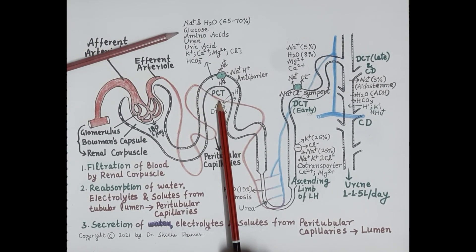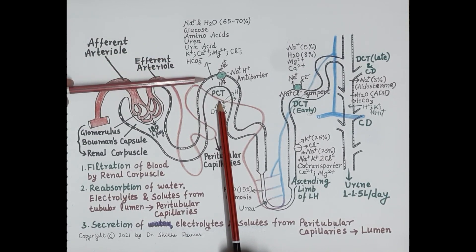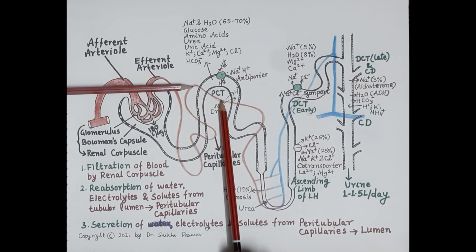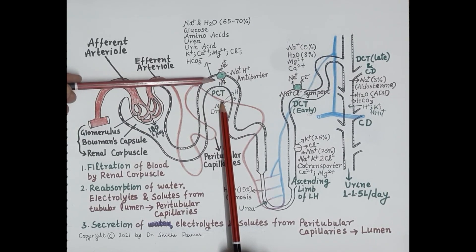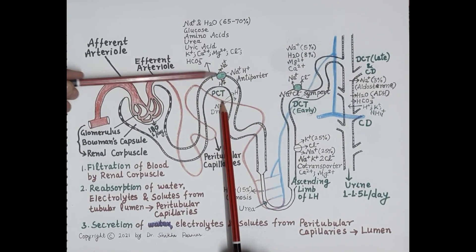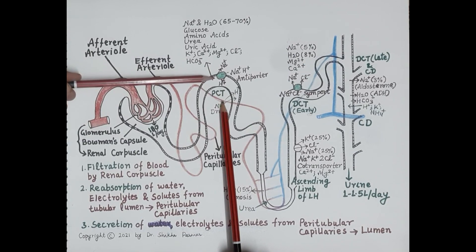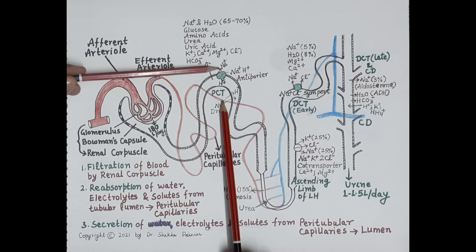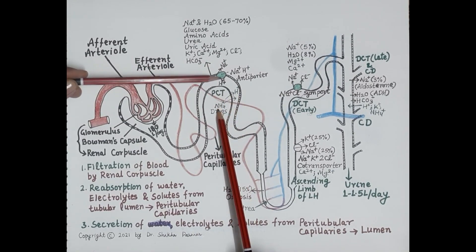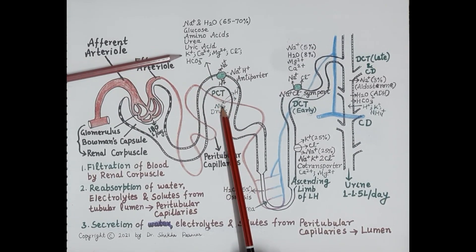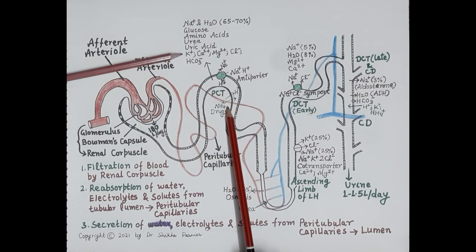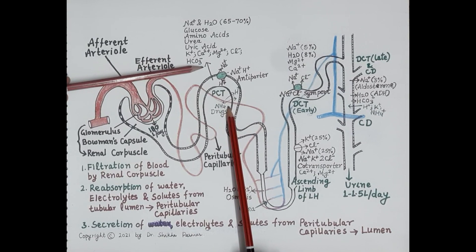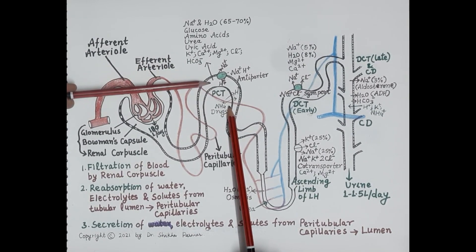These substances move from the filtrate to the renal epithelial cells and from there to the peritubular capillaries, returning to the circulation. Sodium is reabsorbed through the sodium-hydrogen antiporter — sodium is reabsorbed into the peritubular capillaries while hydrogen ions are secreted into the lumen. Additionally, around 50 percent of chloride and variable quantities of calcium, magnesium, and hydrogen phosphate are also reabsorbed from the lumen of the proximal convoluted tubule.